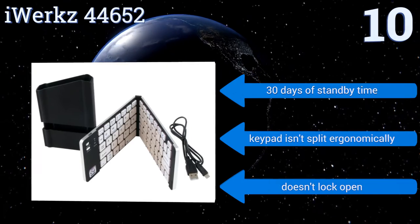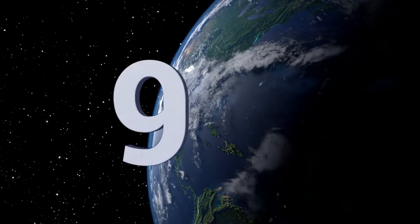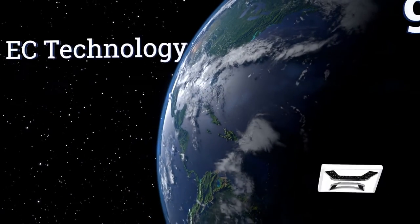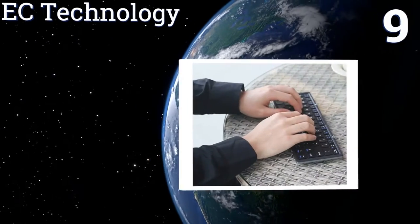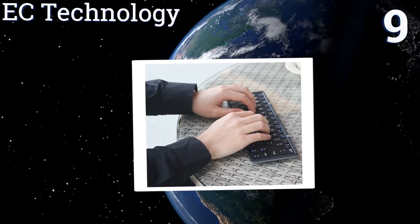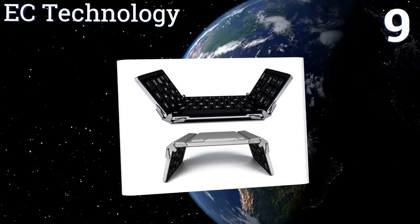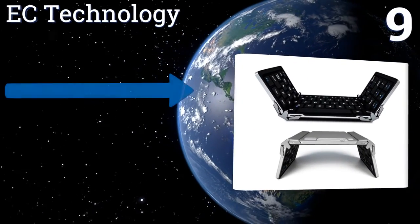At number nine, the EC Technology keys are made using an anodized matte process that creates an excellent sense of touch for good tactile feedback. Also, its convenient power indicator lets you know it's on so you don't waste battery life.